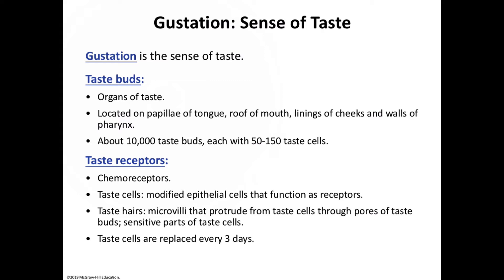Taste derives from molecules that bind to specific receptor proteins embedded in the taste hairs, releasing a neurotransmitter that alters membrane polarization and generates a nerve impulse. Taste cells are replaced every 3 days — likely because of what we subject them to, including hot coffee, hot pizza, and hot drinks that can burn the mouth. The degree of depolarization is directly proportional to the concentration of the substance, and a sufficient stimulus triggers a nerve impulse conducted to the brain.